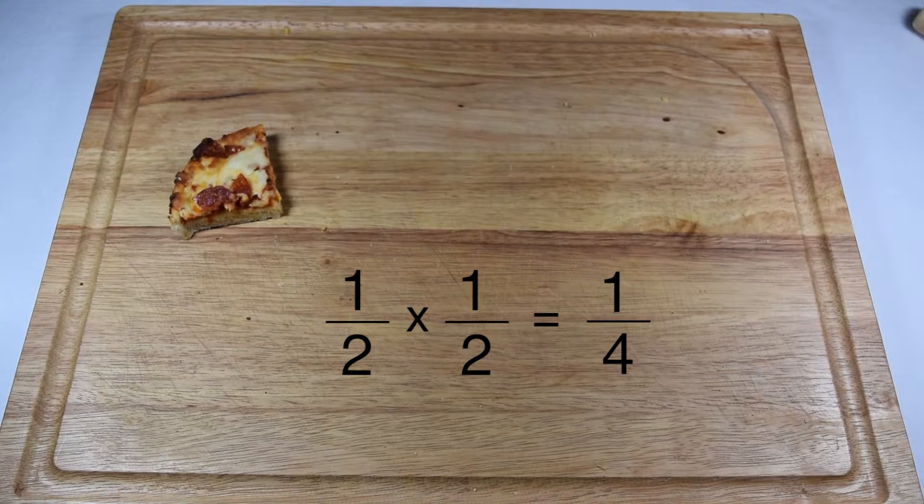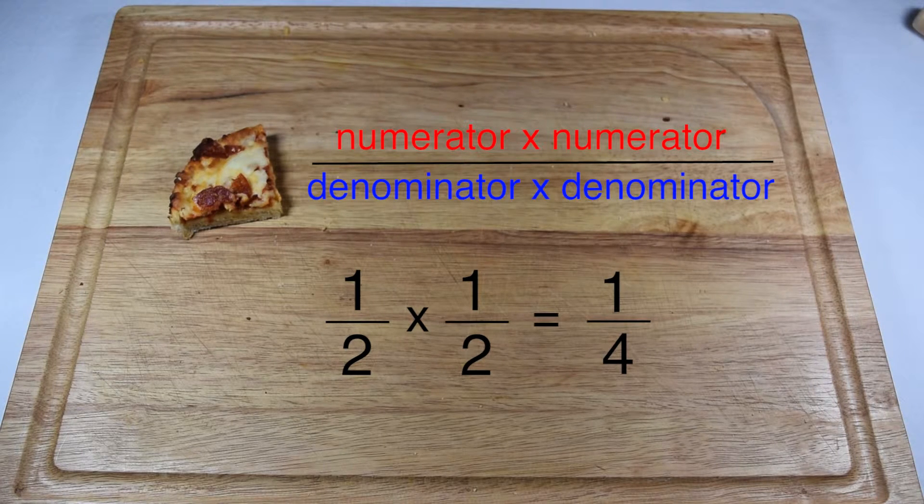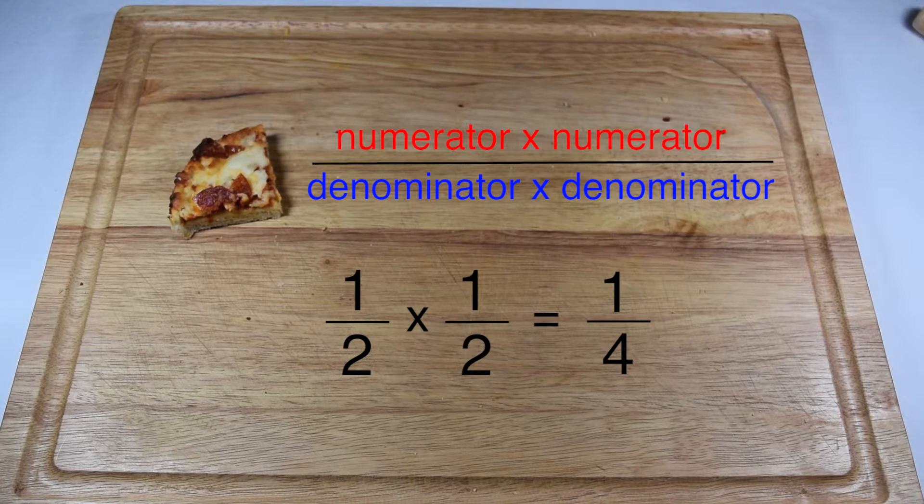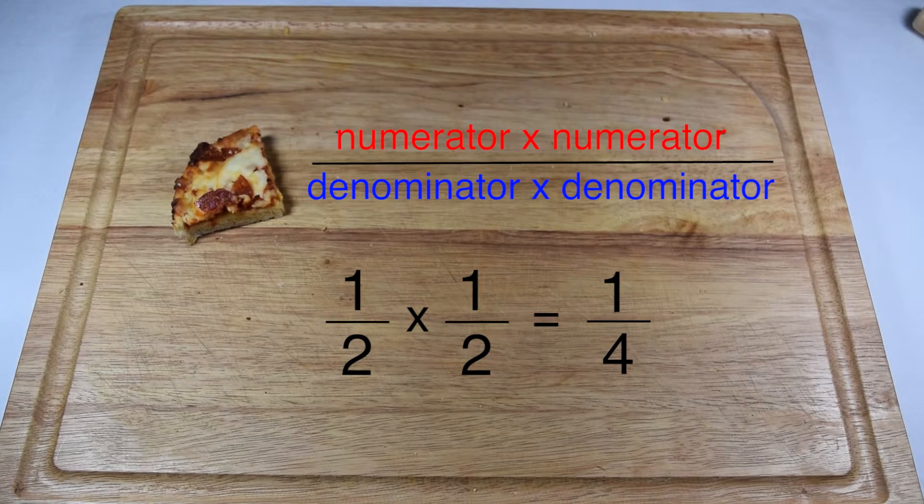So multiplying fractions is just that. Multiply your numerators together to give you the numerator of your product. Multiply the denominators together to give you the denominator of your product. So one half times one half gave us one fourth of the entire pizza.